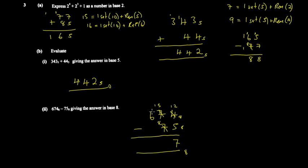15 minus 8 gives 7. Then you carry the 1 set to the next column. So the answer works out, and that's how you work with number bases for subtraction. Number bases are very easy to score in once you understand the method.